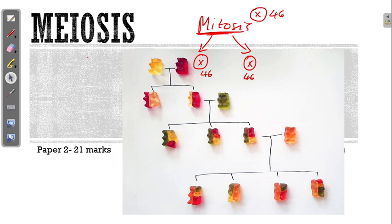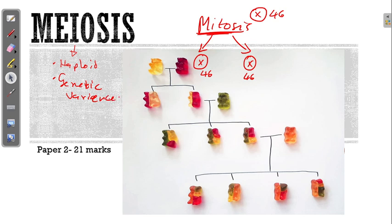Meiosis is different. The purpose of meiosis is to create cells that have half the number of chromosomes. Another purpose of meiosis is to create genetic variance — genetic differences between the cells. You end up with the same genes and the same chromosomes arranged differently.